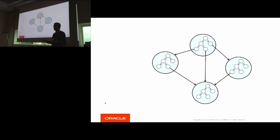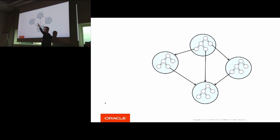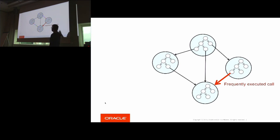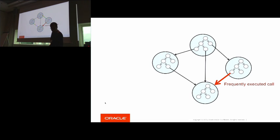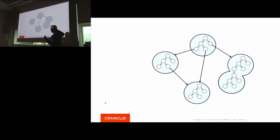Truffle also gives you nice things at the whole graph level. Subgraphs or subtrees represent functions of your guest language — an R function or Ruby method, for example. Similar things happen in that while you execute, you can detect which calls are executed often and you can inline. This is done automatically during partial evaluation. You as a language implementer don't have to worry about it. The actual inlining is super simple — everything is represented as a tree, so you take the root of a function's tree and connect it to the call site. That's the inlining.